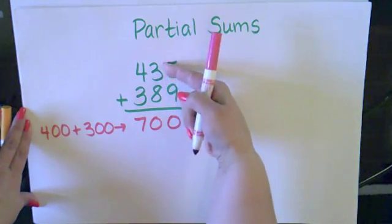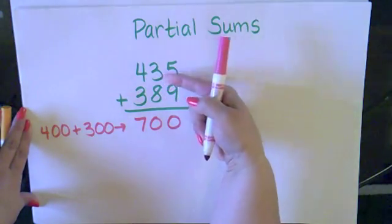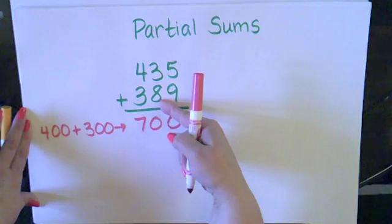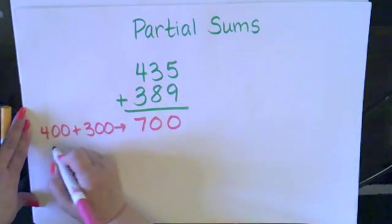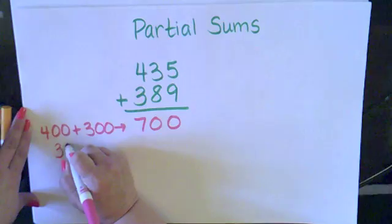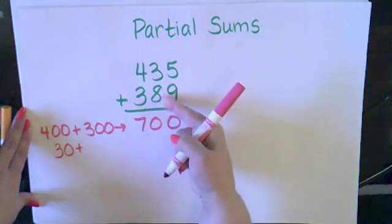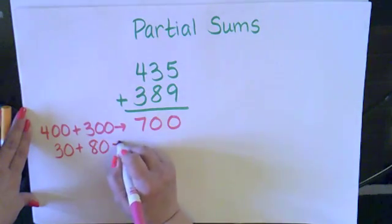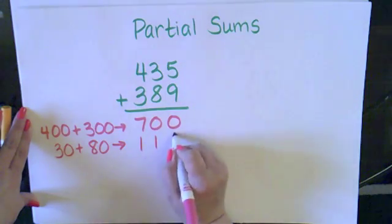Now I'm going to look at my tens place. I have three tens in four hundred thirty-five and eight tens in three hundred eighty-nine. The value of three tens is actually thirty and the value of the eight tens is eighty. So I have thirty plus eighty and that gives me one hundred ten.